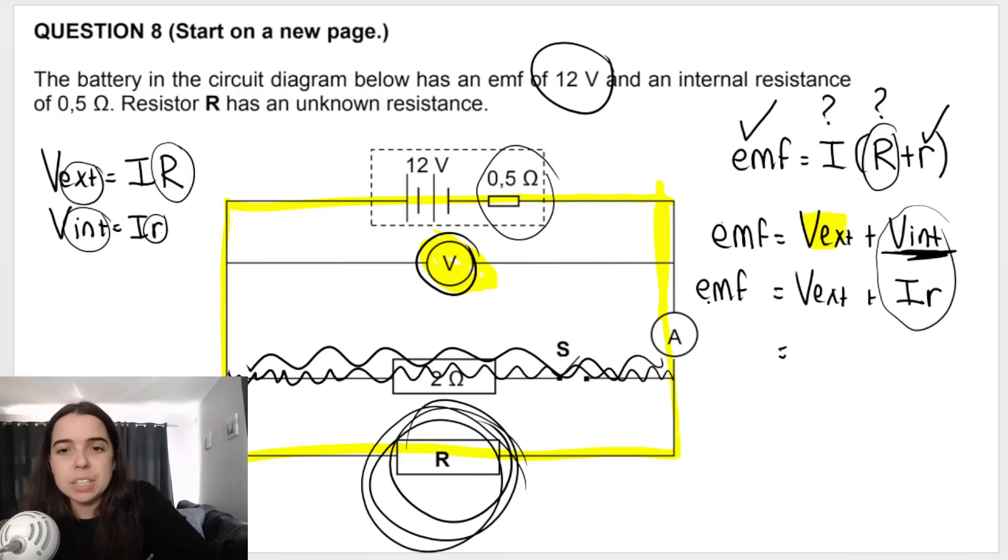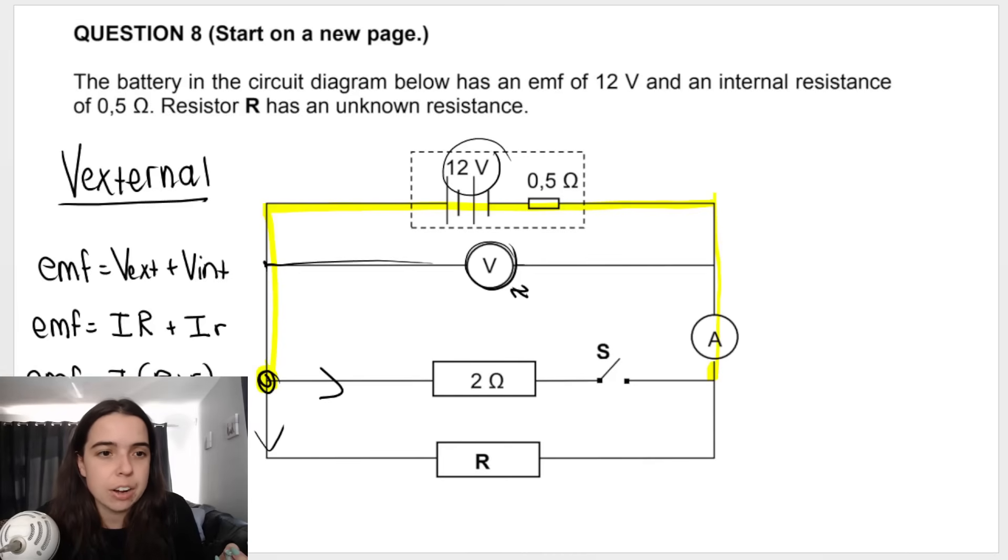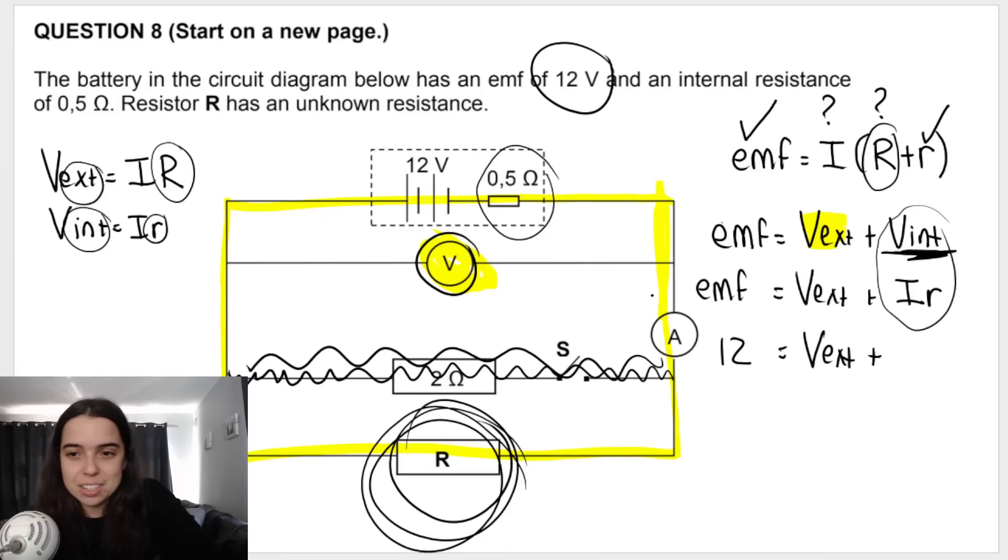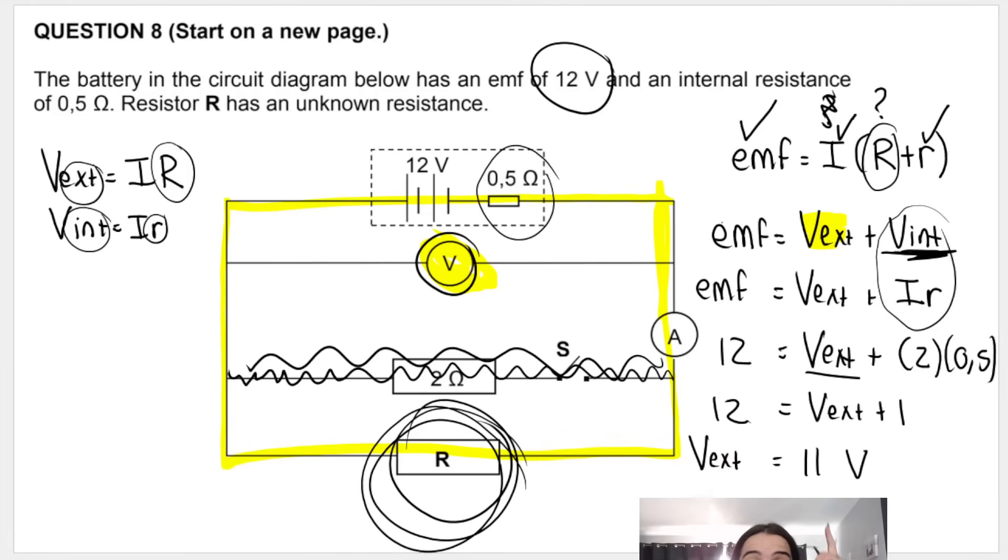Then we fill in what we know. EMF is 12. V external is what I'm ultimately looking for. I, and I just realized that we do have current, which is great. So let's just take a look quickly. Current, they told me in the sentence over here, that the reading on the ammeter is two amperes when the switch is open, which means we do know current, which means I just have to quickly revisit something after this. So two times baby R 0.5. This method is perfectly fine though. So we know current when the switch is open. We know baby R 0.5. We know the EMF and we can work out V external. V external is 11 volts.